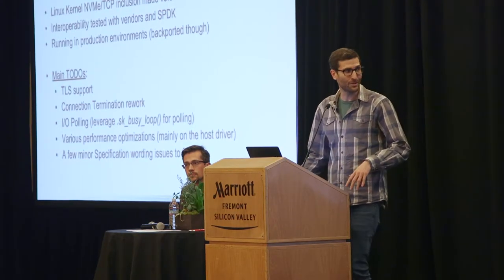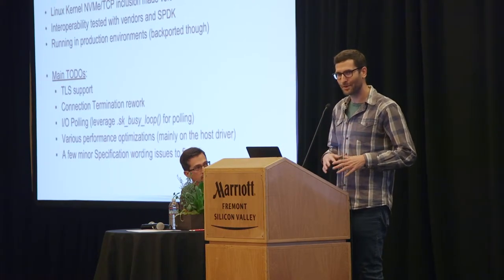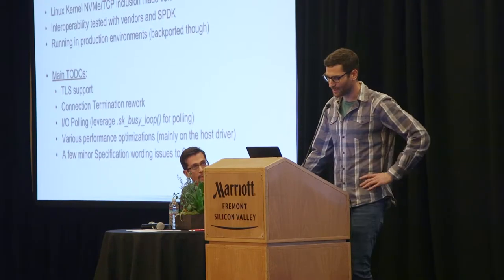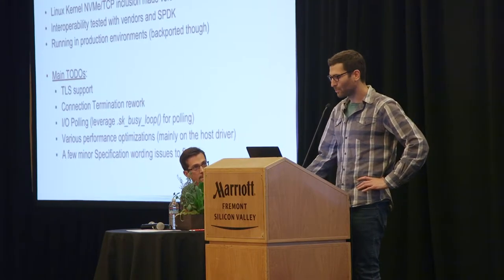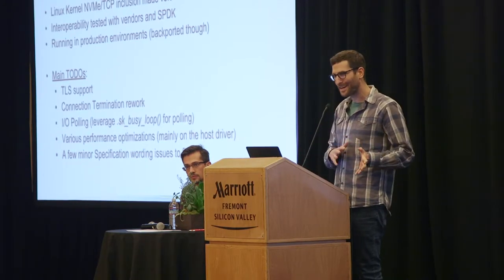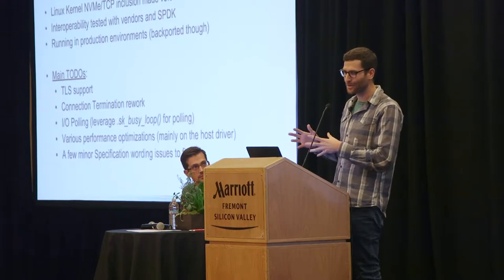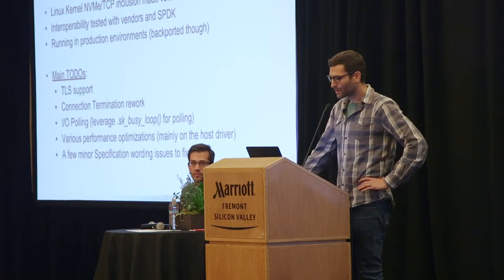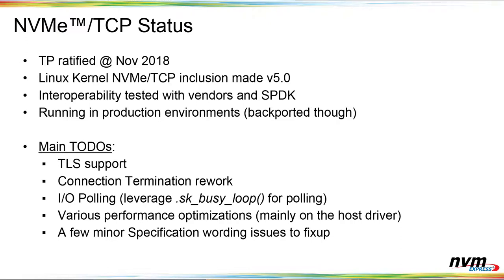The networking stack in Linux already supports polling at least from a socket or TCP consumer side, so we have some work-in-progress code. We also want to take it a step further and have the NIC allocate rings that don't generate interrupts, because today we're basically polling and absorbing the cost of interrupts. There are also all sorts of performance optimizations we're working on, and some minor spec fix-ups remaining.